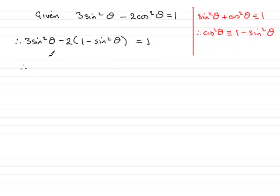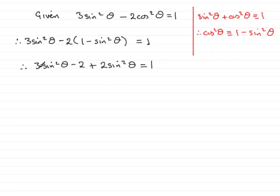If we expand this bracket out, we will then have minus 2 plus 2 sine squared theta, and that equals 1. Grouping the sine squared theta terms, you end up with 5 sine squared theta, and then if I add 2 to both sides, you get 2 and 1 making 3. And that's what we had to show.